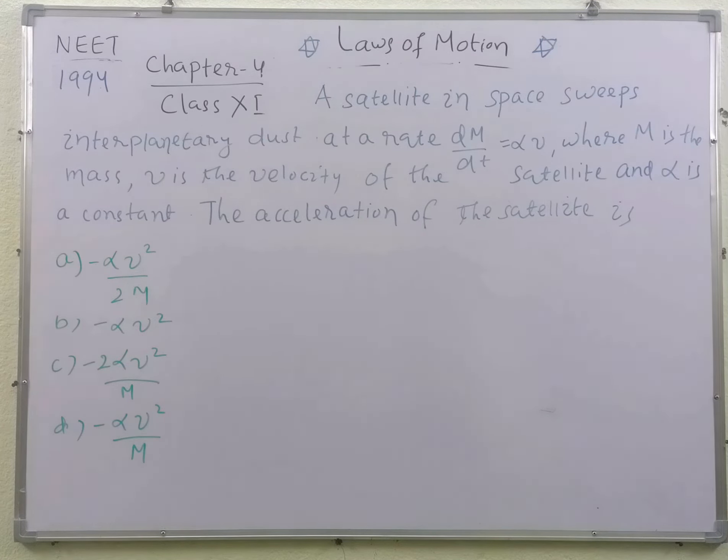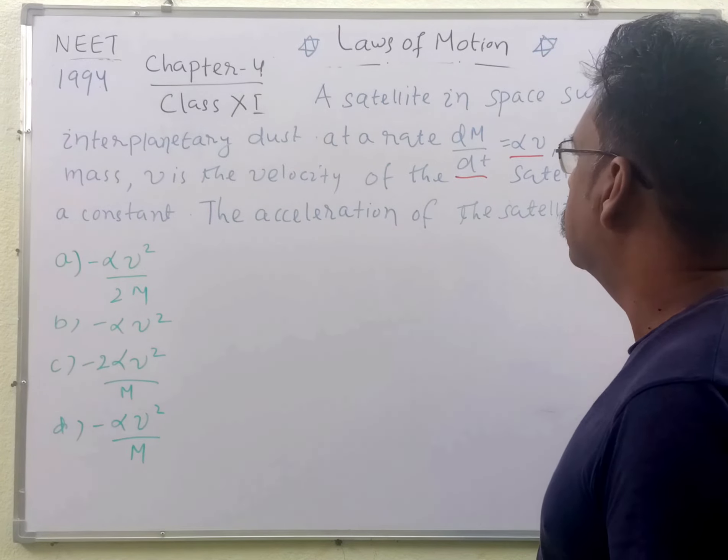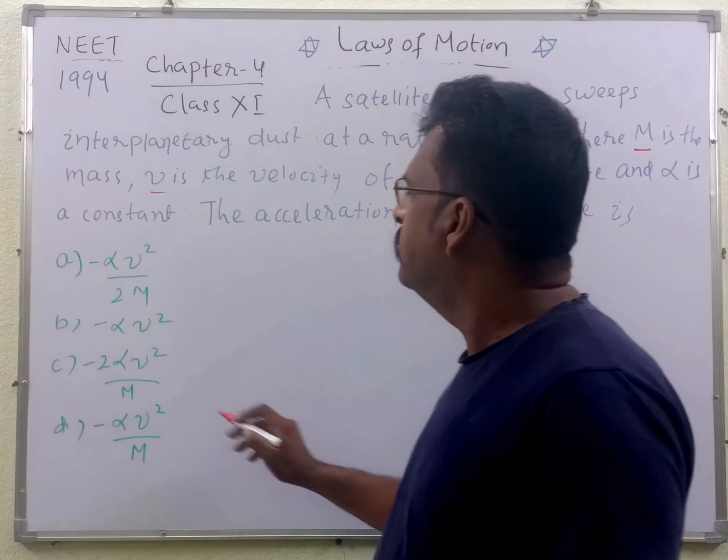The acceleration of the satellite is what we need to find out. What is given? dm/dt is given, M is the mass, and v is the velocity.